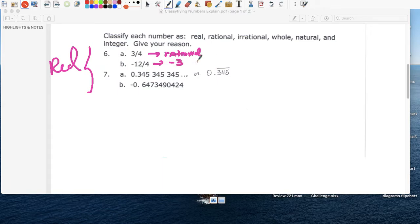Negative twelve over four can be rewritten as negative three. Negative three is definitely real, it's rational, it's an integer, and that's it. It's not a whole number, it's not a counting or a natural number. Natural and counting are the same set.